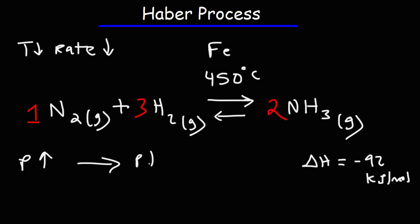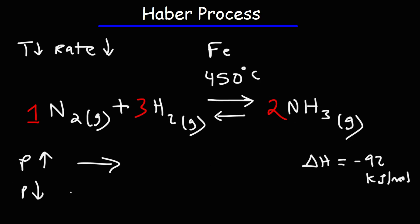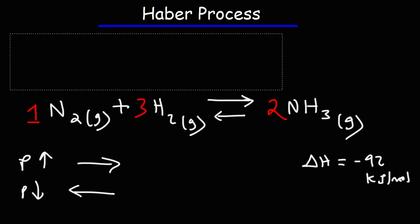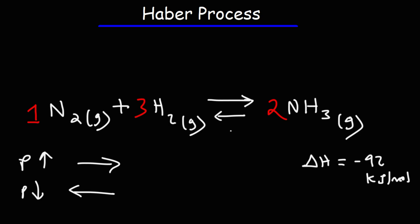So in order for the system to decrease the pressure, it needs to shift to the right. As it shifts to the right, the pressure will go down. So increasing the pressure favors the formation of ammonia — it causes the reaction to shift to the right. If you were to decrease the pressure, it will shift to the left. By the way, the pressure used for this process is typically around 200 atm. The pressure of air at sea level is only one atmosphere, so it's 200 times the pressure at sea level.